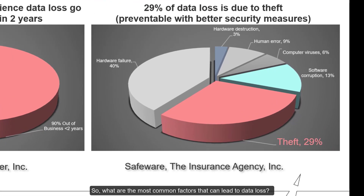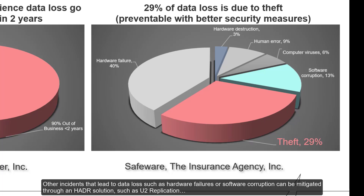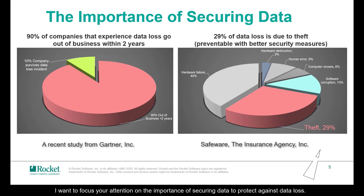What are the most common factors that can lead to data loss? A statistic from SIFWA shows several root cause incidents. Roughly one-third of data loss incidents are caused by theft, which can be prevented through better data security protection measures such as ADE. Other incidents that lead to data loss, such as hardware failures or software corruption, can be mitigated through a disaster recovery solution such as U2 replication. I want to focus your attention on the importance of securing data — most of this risk of data theft can be mitigated by simply utilizing ADE.